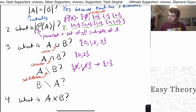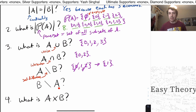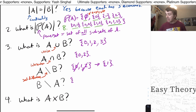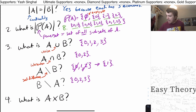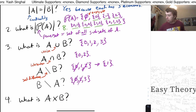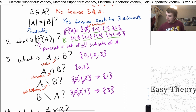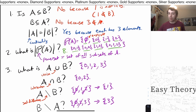For B minus A, we want everything that is in B and not in A. We write down the things in B: 0, 2, 3, and take out everything in A — that is just 0 and 2. So we end up with the set {3}. We could easily predict that, because 3 was the only element not in A.